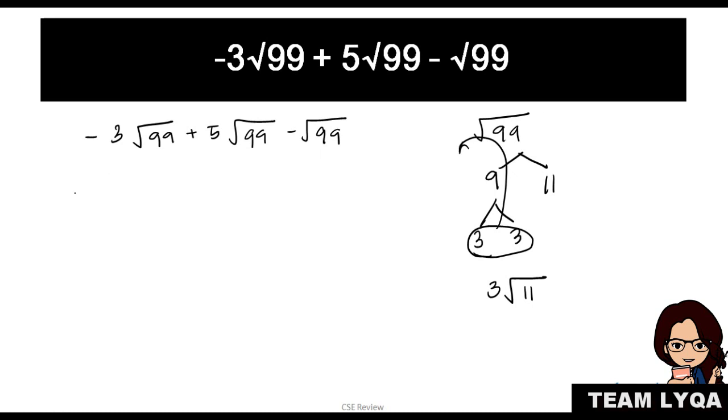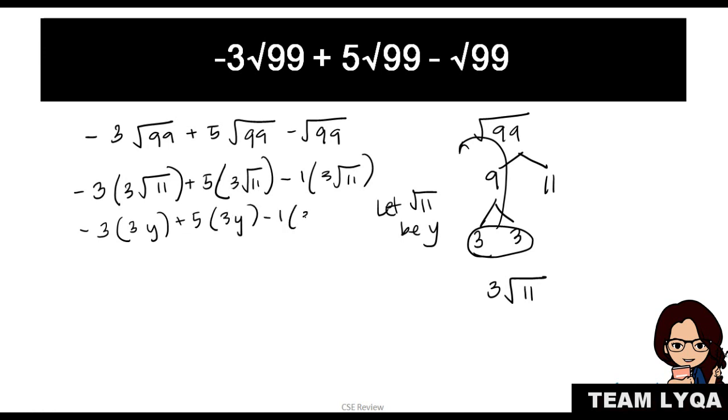So what do you do? Negative 3 times 3 square root of 11 plus 5 times 3 square root of 11 minus 1 times 3 square root of 11. What we'll do, again, same rule as polynomials. If we replace square root of 11, let square root of 11 be y. This would be negative 3 times 3y plus 5 times 3y minus 1 times 3y.